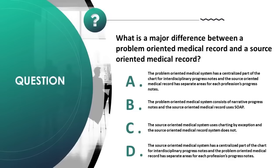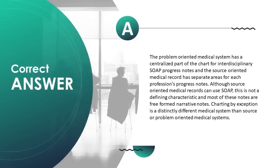What is a major difference between a problem-oriented and a source-oriented medical record? Correct answer is A: the problem-oriented medical system has a centralized part of the chart for interdisciplinary SOAP progress notes, while the source-oriented medical records system has separate areas for each profession's progress notes. Although source-oriented records can use SOAP, most notes are free-form narrative. Charting by exception is a distinctly different system.